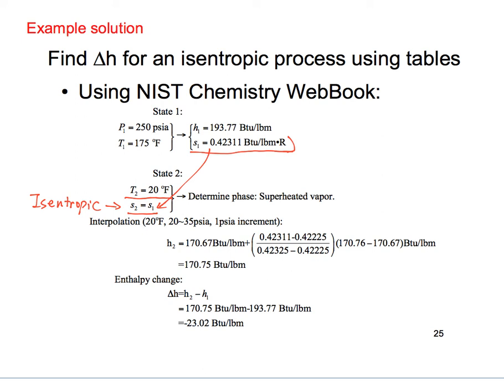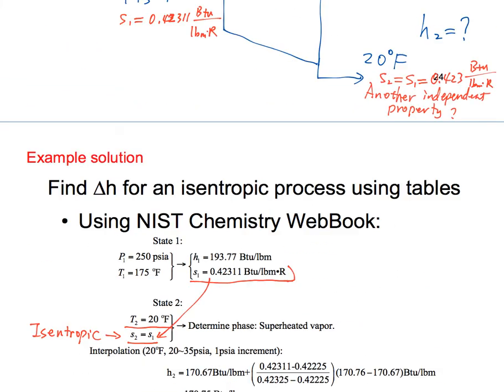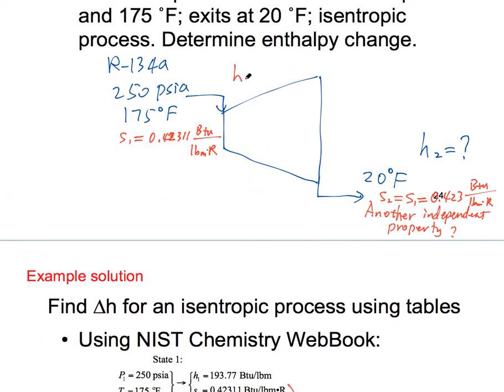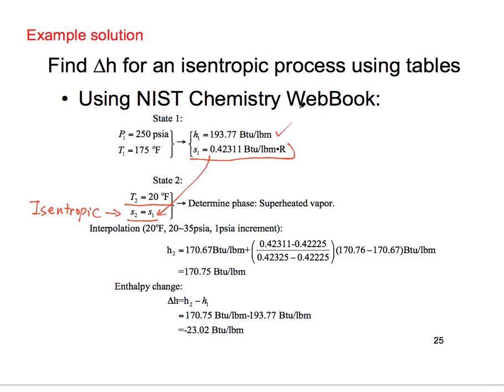We find that the outlet state is also a superheated vapor, and we use the superheated refrigerant table to find the properties at the outlet. In this case, some interpolation will be needed; there is a separate lecture covering how to perform the interpolation. We can interpolate to find the enthalpy at the outlet H2, and together with the inlet enthalpy H1, we can calculate the enthalpy change.